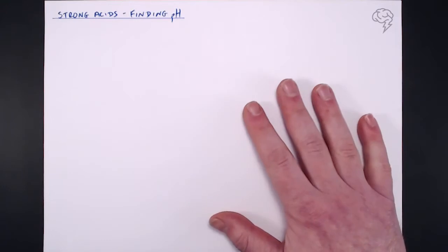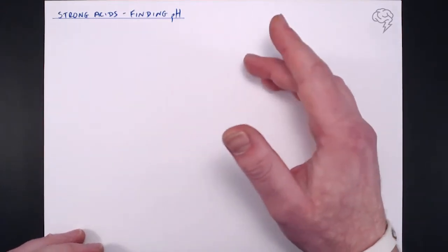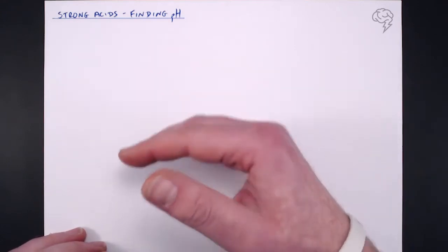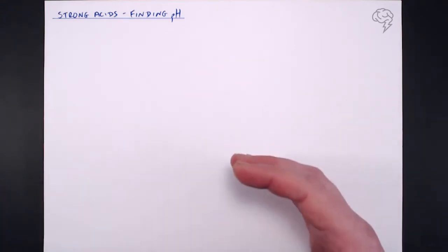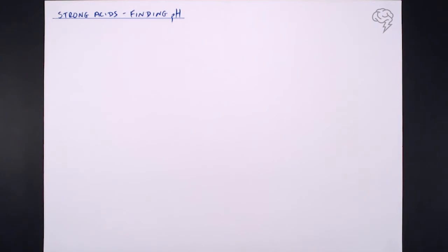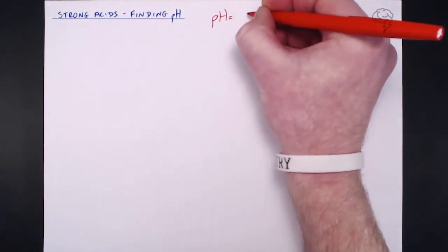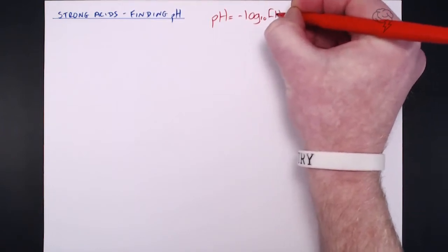At some point in your exam paper, you will get asked to find the pH of a strong acid, and there's a simple step-by-step guide on how to do that. We're going to be using the standard pH calculation expression: pH equals minus log base 10 of the hydrogen ion concentration.